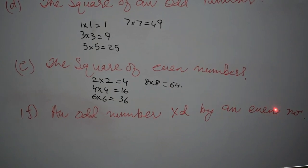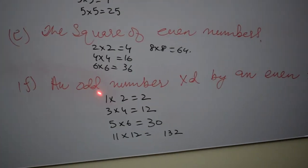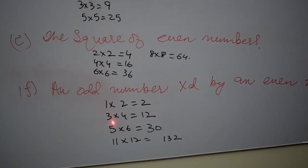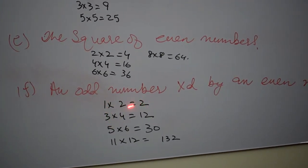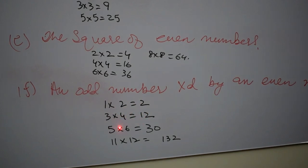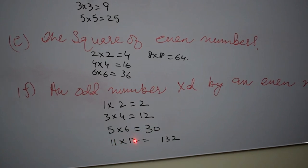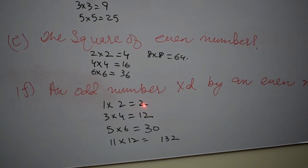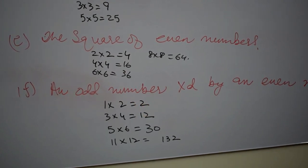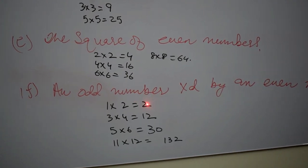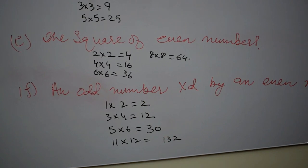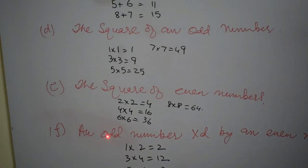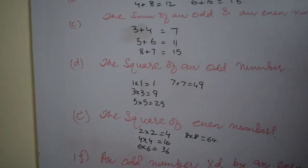An odd number multiplied by an even number — the last question. Students, you see when an odd number is multiplied by an even number, what is the outcome? I have written here: 1 multiplied by 2 is equal to 2, 3 multiplied by 4 is equal to 12, 5 multiplied by 6 is equal to 30, and 11 multiplied by 12 is 132. So dear students, you notice that if an odd number is multiplied by an even number it gives us an even number, always. This was the last part of question number 3 and it concludes the exercise.